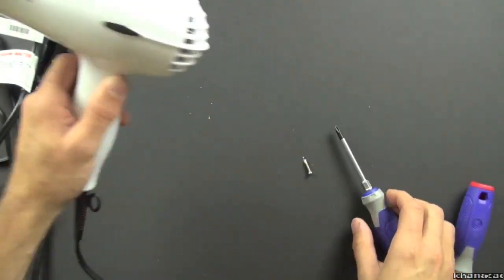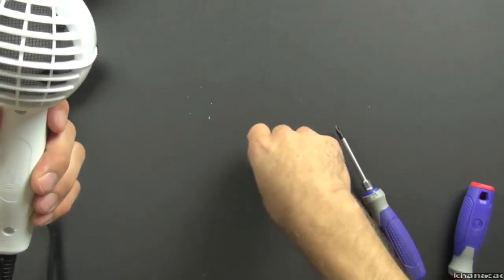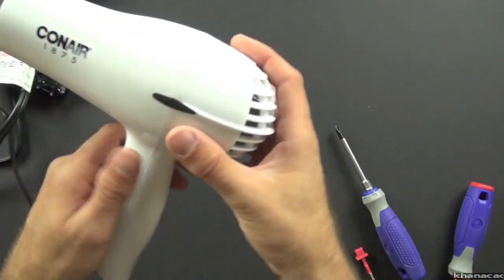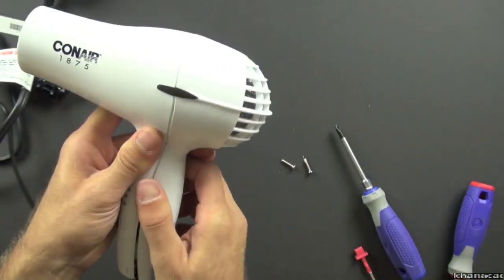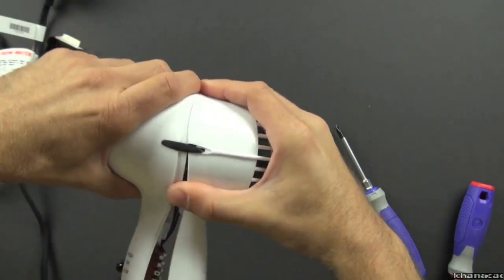And because those screws are visible, they may have also used a bright finish chrome because it looks better than, say, a painted screw would. It also provides a little better corrosion resistance than paint does.